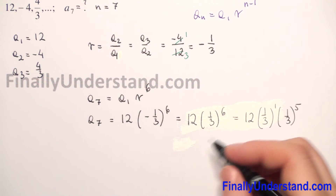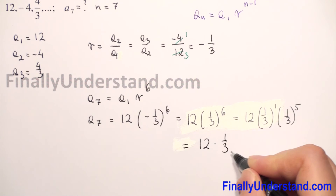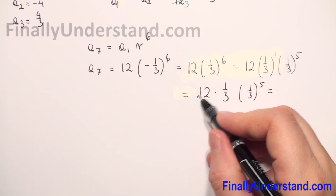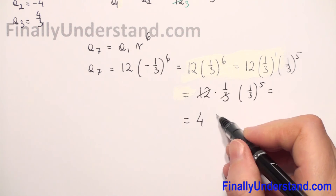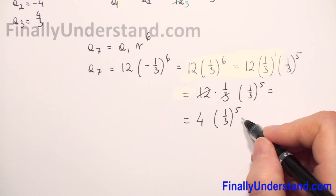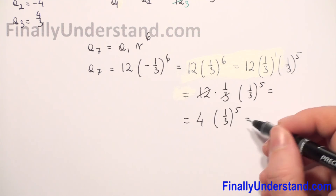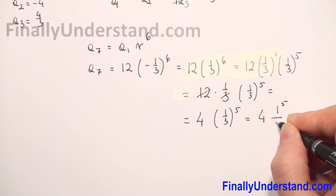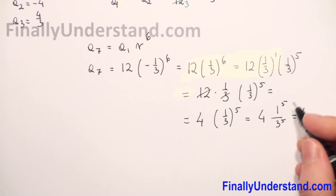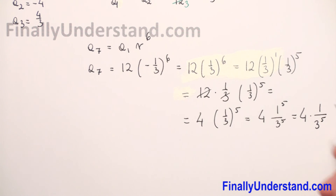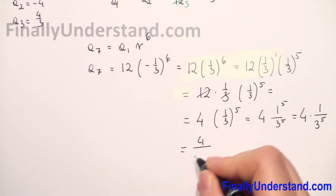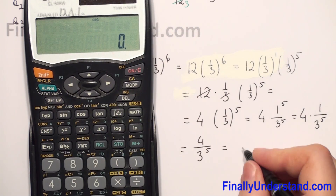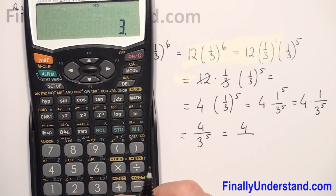So this equals 12 times one third to the first power, which is one third, times one third to the fifth power. We can reduce 12 and 3, giving 4 times one third to the fifth power. This can be written as 4 times 1 over 3 to the fifth power, which equals 4 over 3 to the fifth power.